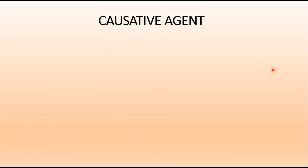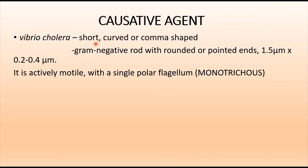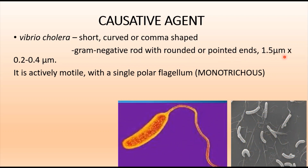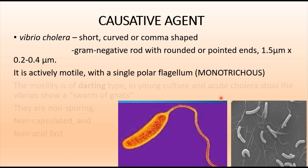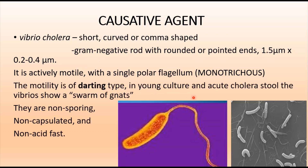The causative agent, Vibrio cholerae, is a short curved or comma-shaped bacterium. It is a gram-negative rod-shaped organism; on gram staining it appears pink. It measures about 1.5 micrometers in length and 0.2 to 0.4 micrometers in width. It is actively motile with a single polar flagellum, also considered monotrichous. The motility is of a darting type in cultures, and in acute cholera stools it shows a 'swarm of gnats' movement. It is non-sporing, non-capsulated, and non-acid fast.